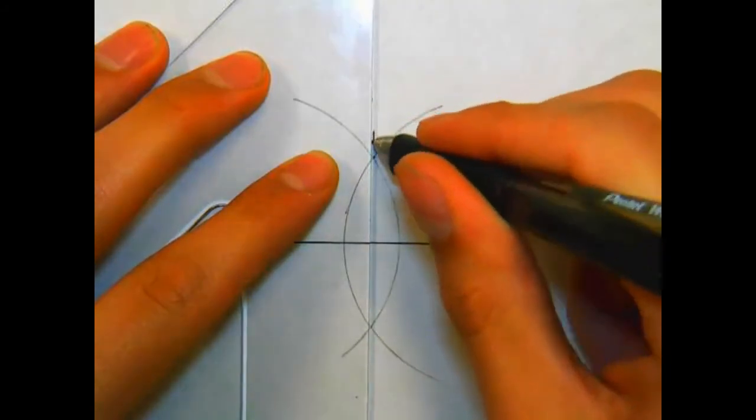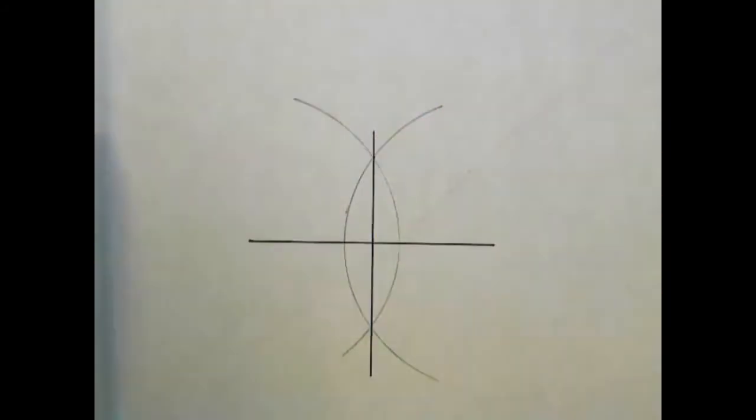This line represents the bisection of our original line, and our line is split into two.